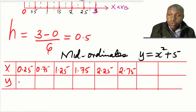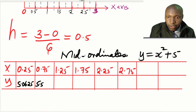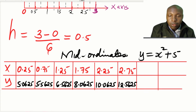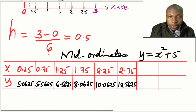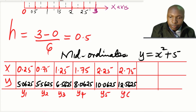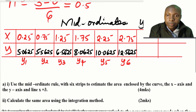Using y = x² + 5 to calculate the y-values: for x = 0.25, y = 5.0625; for x = 0.75, y = 5.5625; for x = 1.25, y = 6.5625; for x = 1.75, y = 8.0625; for x = 2.25, y = 10.0625; and for x = 2.75, y = 12.5625. These are the six mid-ordinate heights y1 through y6.